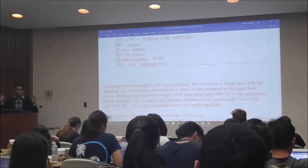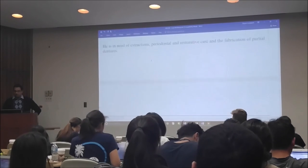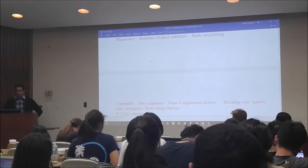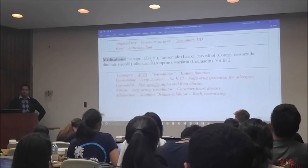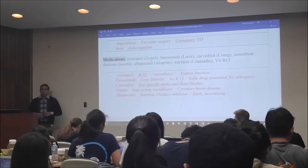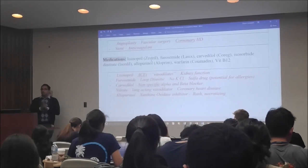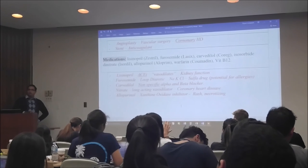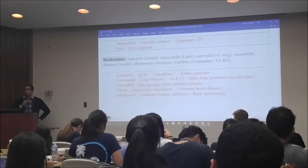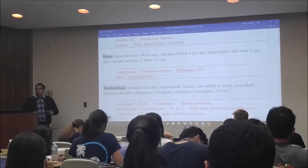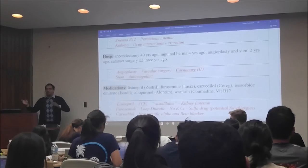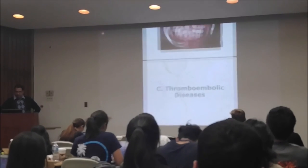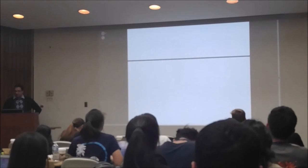EGFR is 45 mL per minute — GFR is the glomerular filtration rate, a measure of kidney function. At 45, this patient has moderate kidney loss. So at this point we've effectively worked up the case. Anything I don't know or want to understand further — I'll go to either the web, back to my PowerPoints from Systems 1, or review books you use for boards. If you don't know enough about ACE inhibitors, go back and review that. If you forgot about stents, valves, and when to do antibiotic prophylaxis, go back and review that.